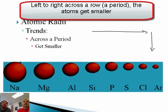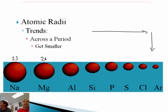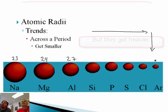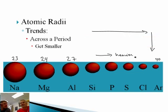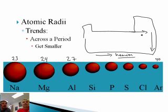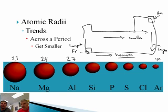If I look at sodium — mass 23 — then magnesium is 24, aluminum is 27, and going all the way across, argon is like 40. So they get heavier as you go across, but they get smaller. That's weird. The biggest atom on the periodic table is francium — the largest of all atoms. The smallest atom is helium. As you go across, they get smaller; as you go down, they get larger.